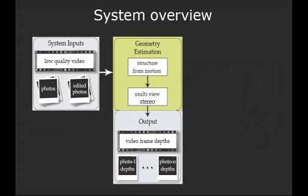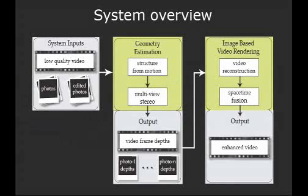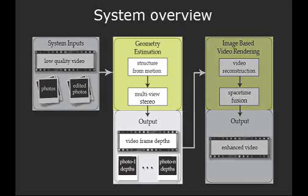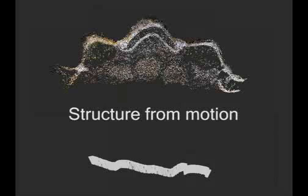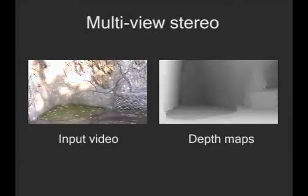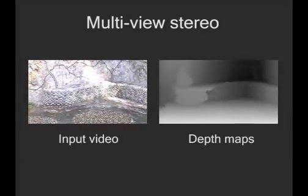To accomplish this, using the input video and photographs, we estimate the scene geometry using structure from motion and stereo. Next, our image-based video rendering algorithm constructs an enhanced video using the appearance of the photographs. This spatial appearance is created while still preserving the temporal dynamics of the video, such as highlights and dynamic lighting. The scene geometry is estimated using structure from motion to recover a sparse 3D point cloud of the scene and the relative poses of the video frames and still photographs.